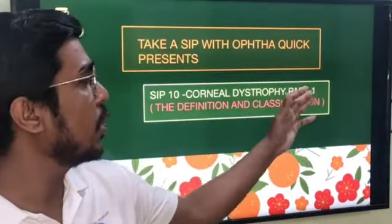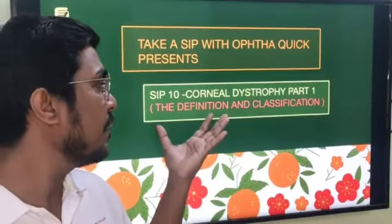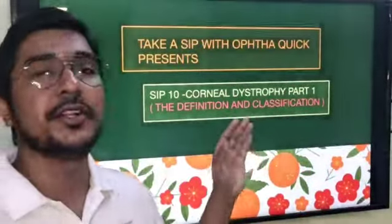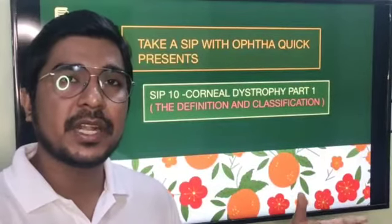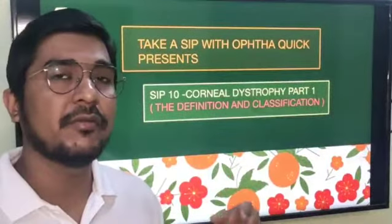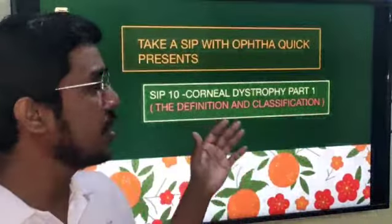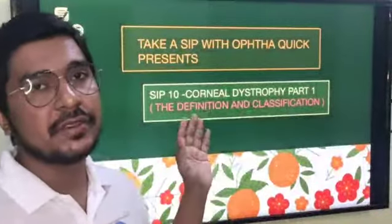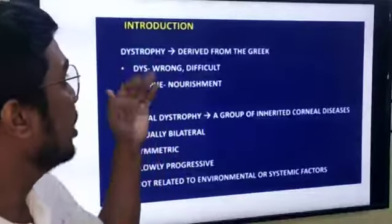We are here with Sip 10, that is Corneal Dystrophy Part 1, where we will discuss the definition and the classification. I have separated this because definition and classification have lots of MCQs asked over just these two points. I will also have other sips on the individual corneal dystrophies, but the most important starting point is definition and classification. So let's start.